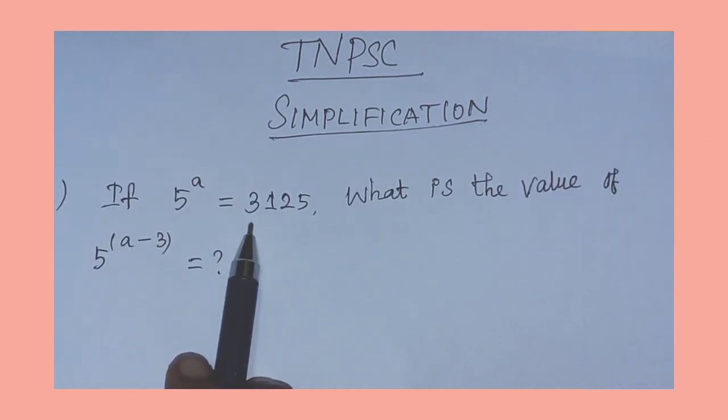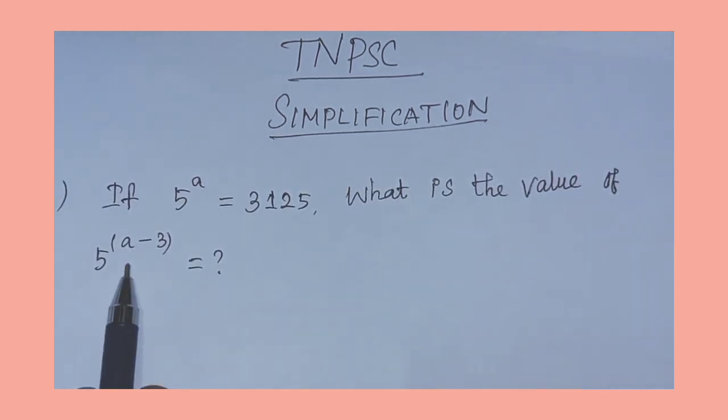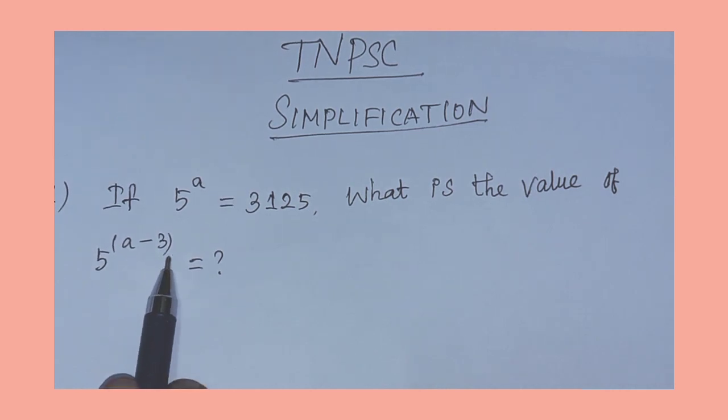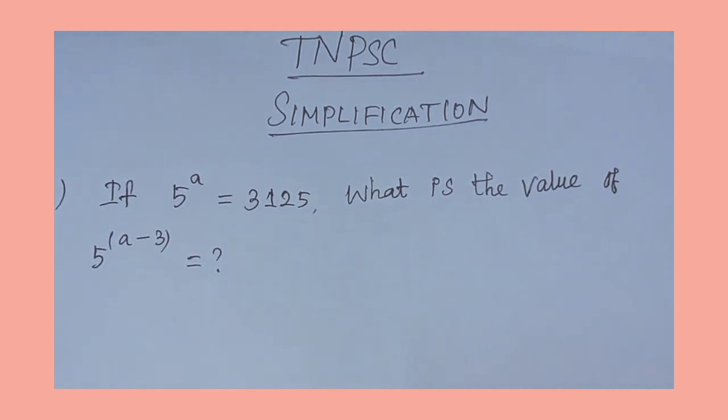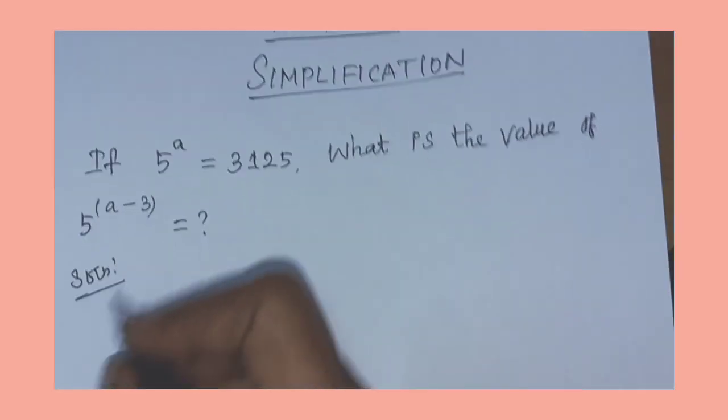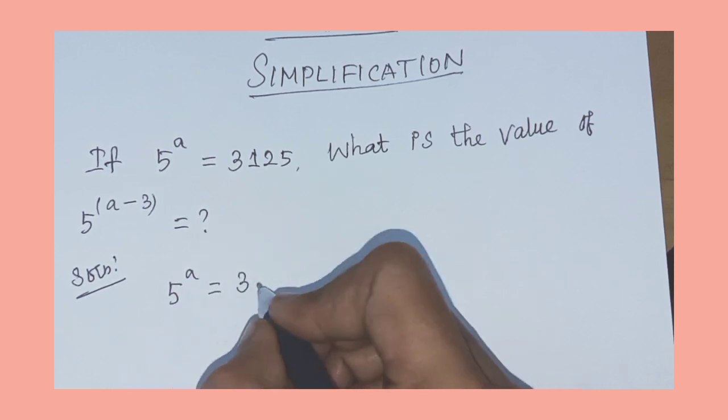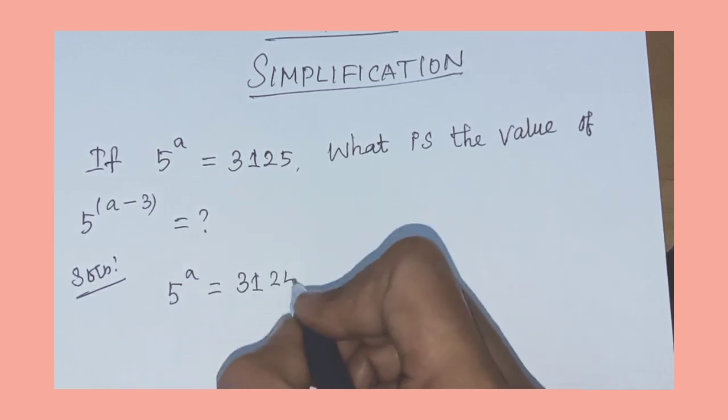If 5 power A equals 3125, what is the value of 5 power A minus 3 equal to question mark? So, solution. Go to the data: 5 power A equal to 3125.